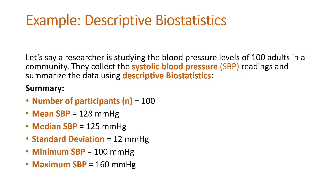The summary statistics are as follows: sample size is 100, mean SBP is 128 mmHg, median SBP is 125 mmHg, standard deviation is 12 mmHg, minimum SBP is 100 mmHg, and maximum SBP is 160 mmHg.